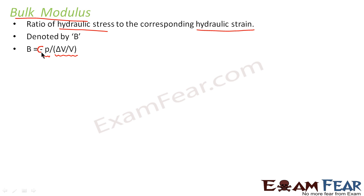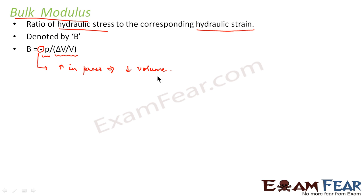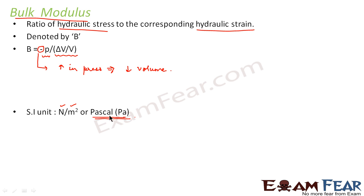There is a negative sign in the formula. This negative sign shows that an increase in pressure results in a decrease in volume. The SI unit of bulk modulus is newton per meter square or Pascal, because it is force per unit area. The strain is dimensionless, so the unit remains newton per meter square.